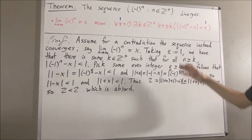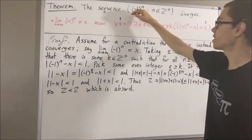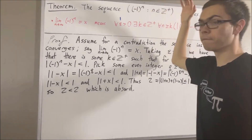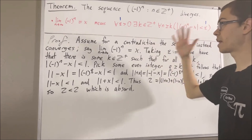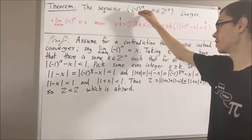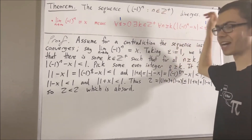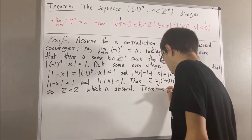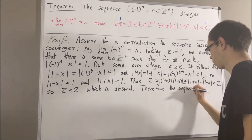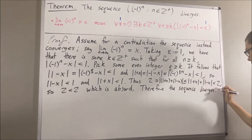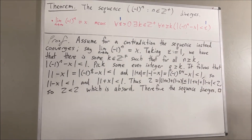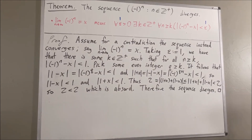Our assumption that this sequence converges led us to a contradiction, so we must instead have that this sequence diverges. And so, this completes the proof. That's pretty much it for this video.